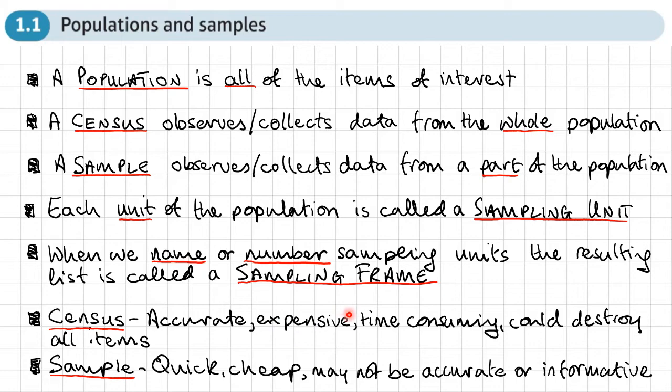However, it's expensive and time consuming. There may be lots and lots of data that needs to be analyzed and it could end up destroying all the items. For example, if we go back to our factory example of factory producing tins of soup, if they need to sample the soup in the tins and they did a census, then they'd have to open every single tin and sample it and they'd end up destroying all the items and not selling anything. Not a good business model.